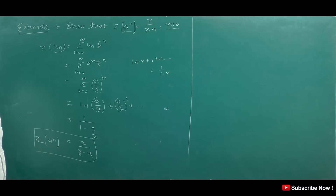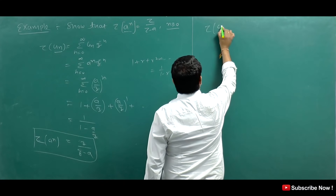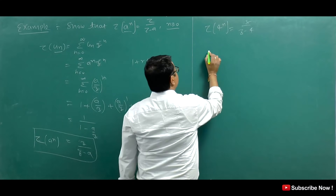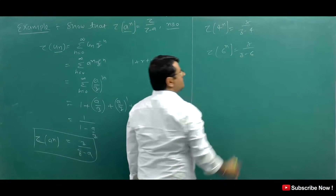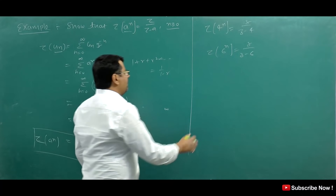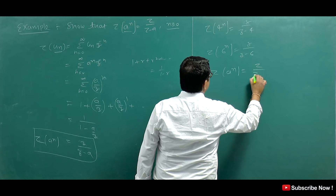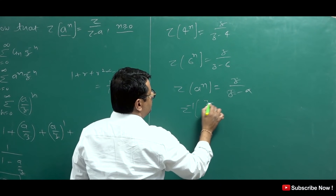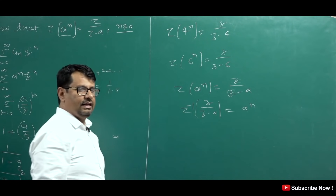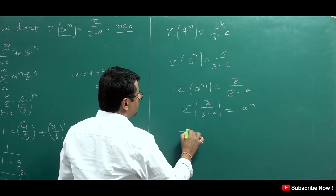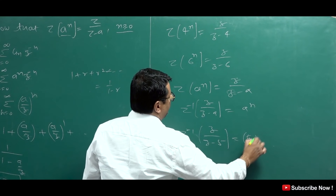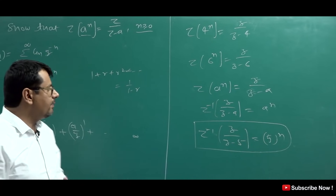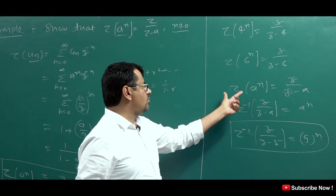So the Z-Transform of A^N is Z/(Z - A). If you ask for the Z-Transform of 4^N, then A = 4, so the answer is Z/(Z - 4). Similarly, Z-Transform of 6^N is Z/(Z - 6). Conversely, the inverse Z-Transform of Z/(Z - A) is A^N. For example, the inverse Z-Transform of Z/(Z - 5) is 5^N.